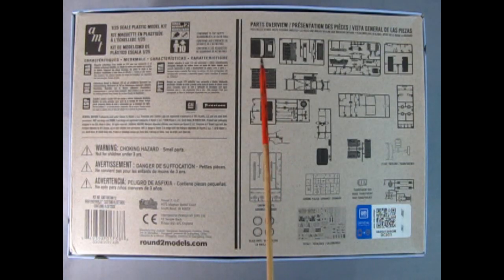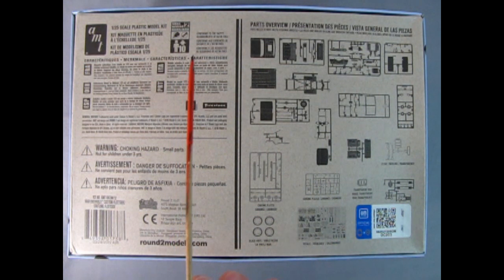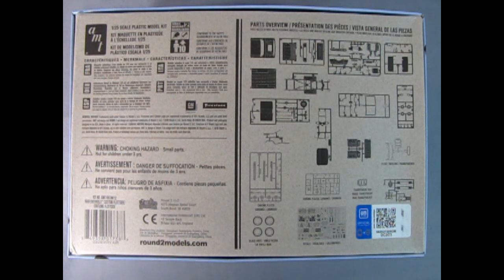Underneath we get a parts overview of everything that's included in this model kit. Tires, decals, chrome pieces and the regular plastic parts. It is a licensed GM official product for ages 10 and up, will require paint and glue. On this side of the box we get a top rear three-quarter view of the truck itself as well as the mounting for the go-kart in the back, includes go-kart racks. We also have the expanded decal sheet with colorful options, which is more than what we got in the 1998 original release.